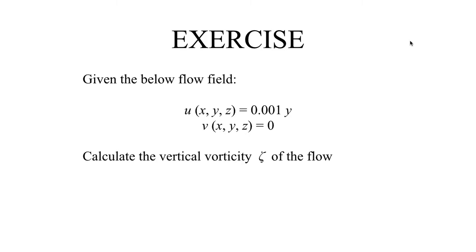Let's go ahead and take a look at a flow field that's given by the equations below. The zonal wind as a function of x, y, and z is equal to 0.001y, and the meridional wind as a function of x, y, and z is equal to zero.